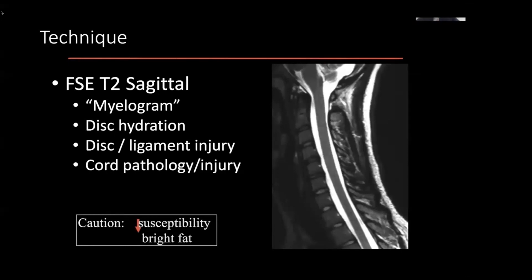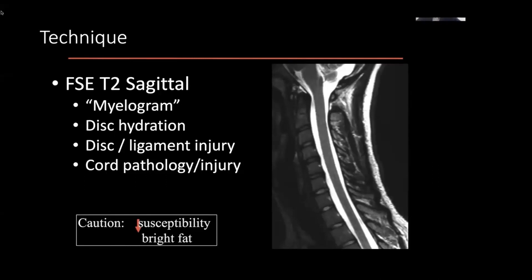T2 is mostly about looking at water — CSF being water, and water also representing edema. Tissue can only do certain things on a particular image: it can be the same as normal, brighter, or darker than normal. Oftentimes that's not specific, but if you look across multiple parameters, you can often come up with a good differential and hopefully a specific diagnosis.